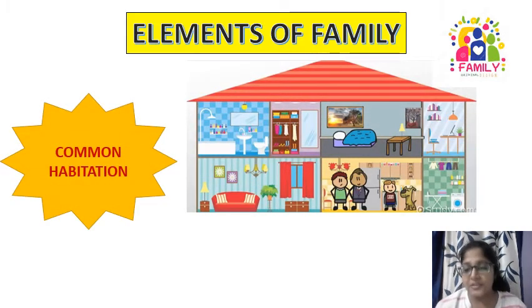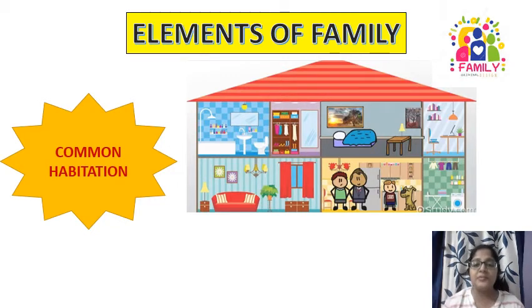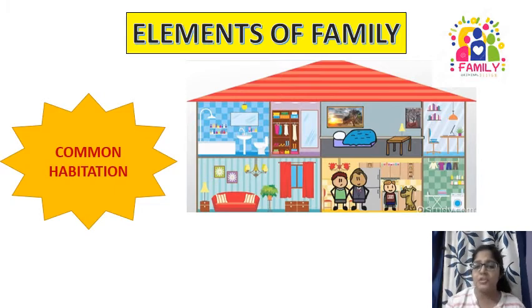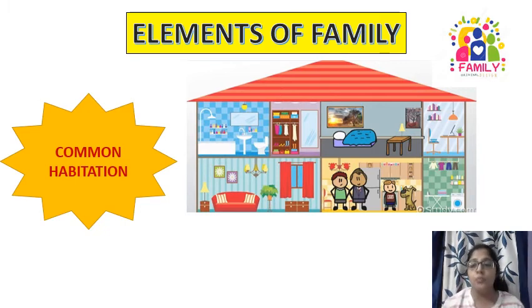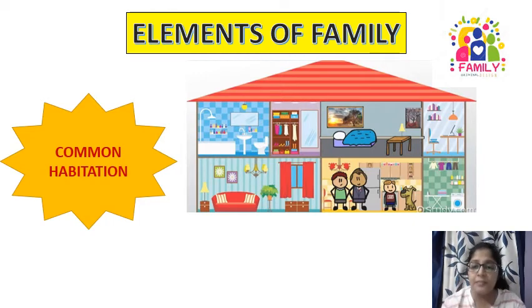Next is common habitation. A family develops under common social habits and common habitation. We are living together — by the bond of marriage, blood relation, or adoption — and we are sharing a common roof. As you can see here, the whole family is living under one building, under the same roof.